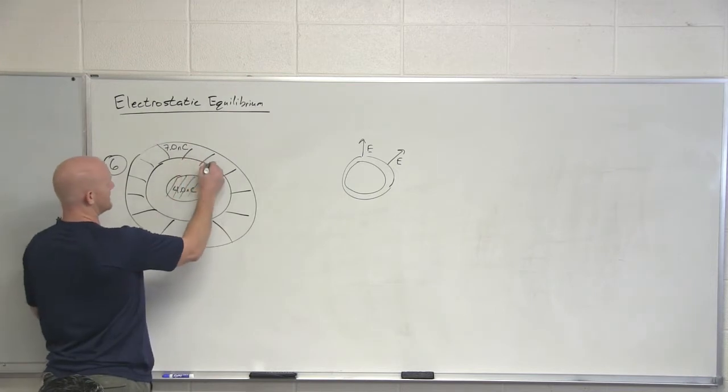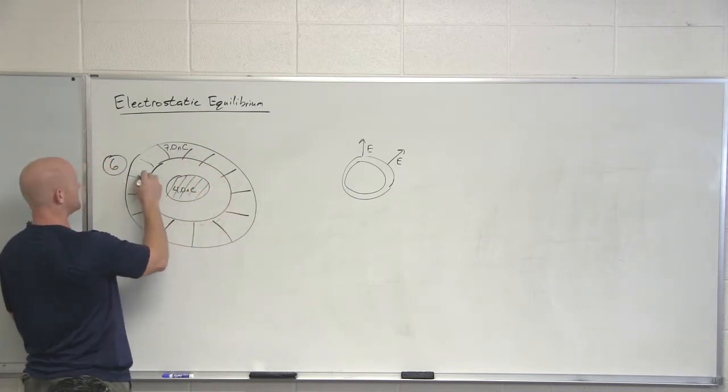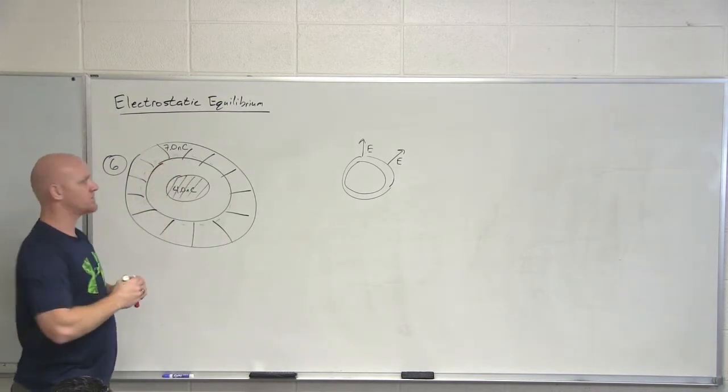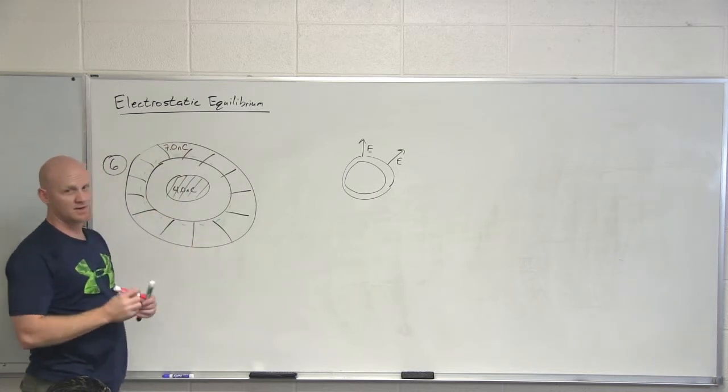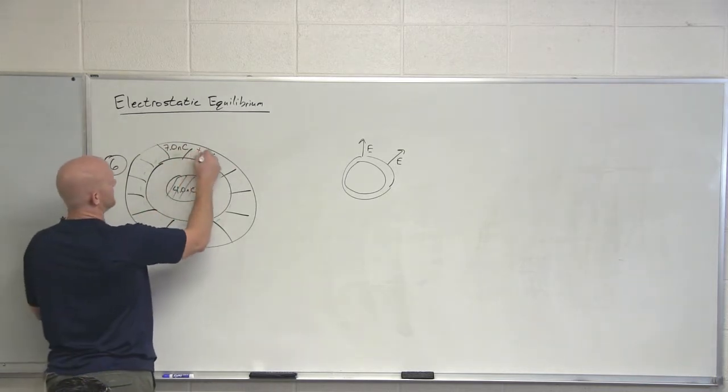They want to polarize this thing and move towards the center as far as they can. So this inner surface is going to become negatively charged. And if the electrons have moved towards that inner surface, well then there's less electrons on the outer surface and it has become positively charged.